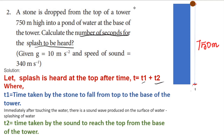First let us understand the concept of the question. There is a big tower with a height of 750 meters. The stone is dropped from the top to the bottom. At the base of the tower there is a pond. Once the stone touches the water, a sound wave is produced on the surface of the water — that is known as the splashing of water. There is some time taken by the sound to reach the top from the base.